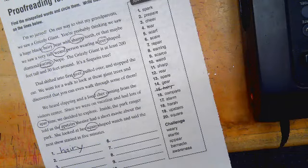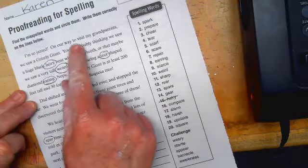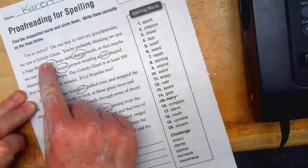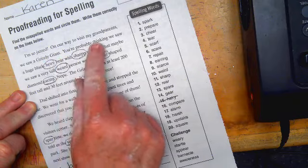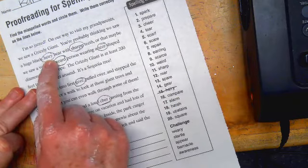And so the words that I found, I started out with I'm so jazzed. On our way to visit my grandparents, we saw a grizzly giant. You're probably thinking we saw a huge black hairy looked spelled wrong. Definitely.